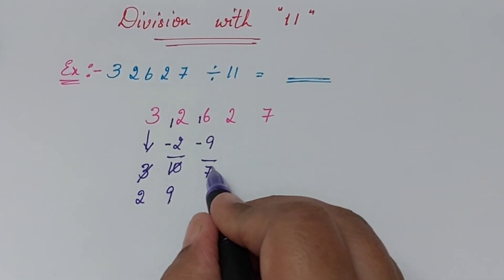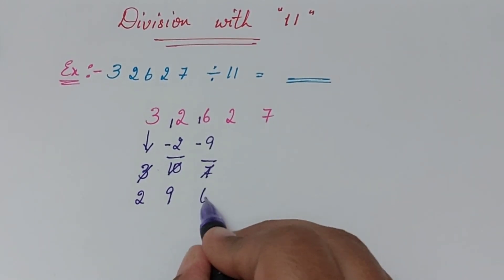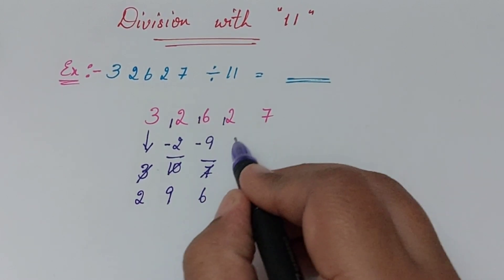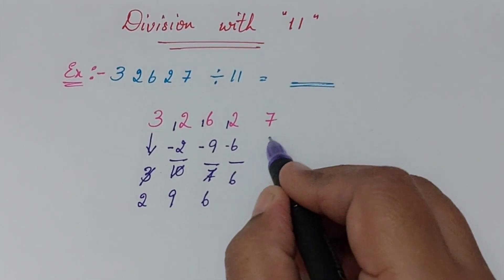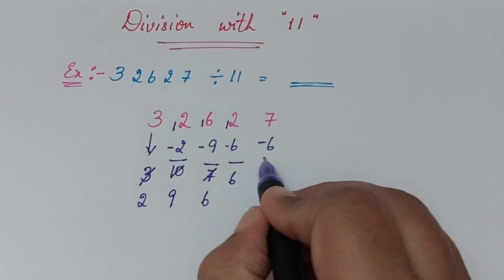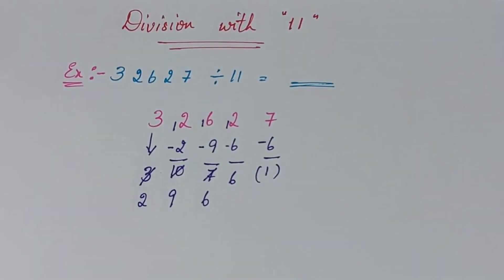So 2 minus 7 we can't do. So reduce this to 6, and now it is 12. 12 minus 6 we can do, which is 6 here. So 7 minus 6 directly we can do. So the reminder is 1 for us.